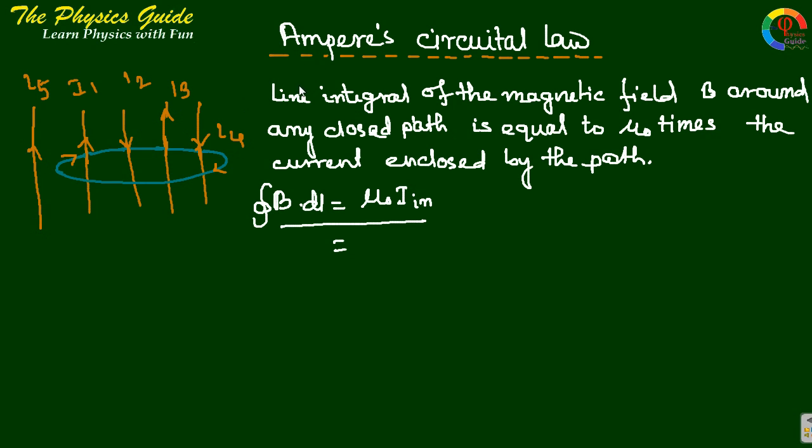Ampere's Circuital Law: Line integral of magnetic field B around any closed path is equal to mu-not times the current enclosed by the path. So this is the statement of Ampere's Circuital Law.